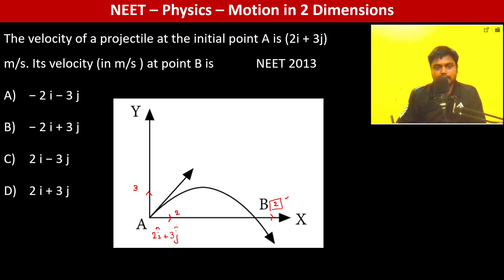by conservation of energy, the kinetic energy at A should be equal to the kinetic energy at B, because there is no gain or loss of potential energy. So therefore the kinetic energy at B and A must be the same.